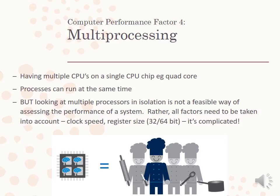Multi-processing is when you have multiple CPUs on a single CPU chip — like a quad-core or dual-core — and it goes up to many cores. Processors can run at the same time, but looking at multiple processes in isolation is not a good way of gauging performance. You have to take everything into account: clock speed, register size, and multi-processing — so it is complicated.